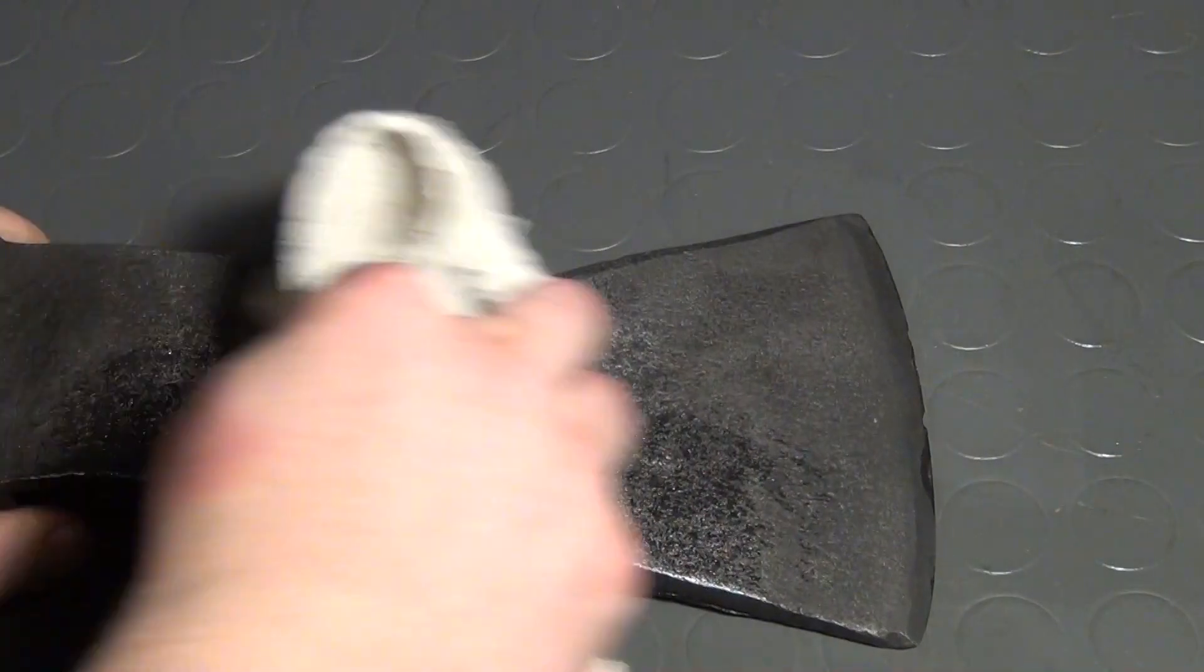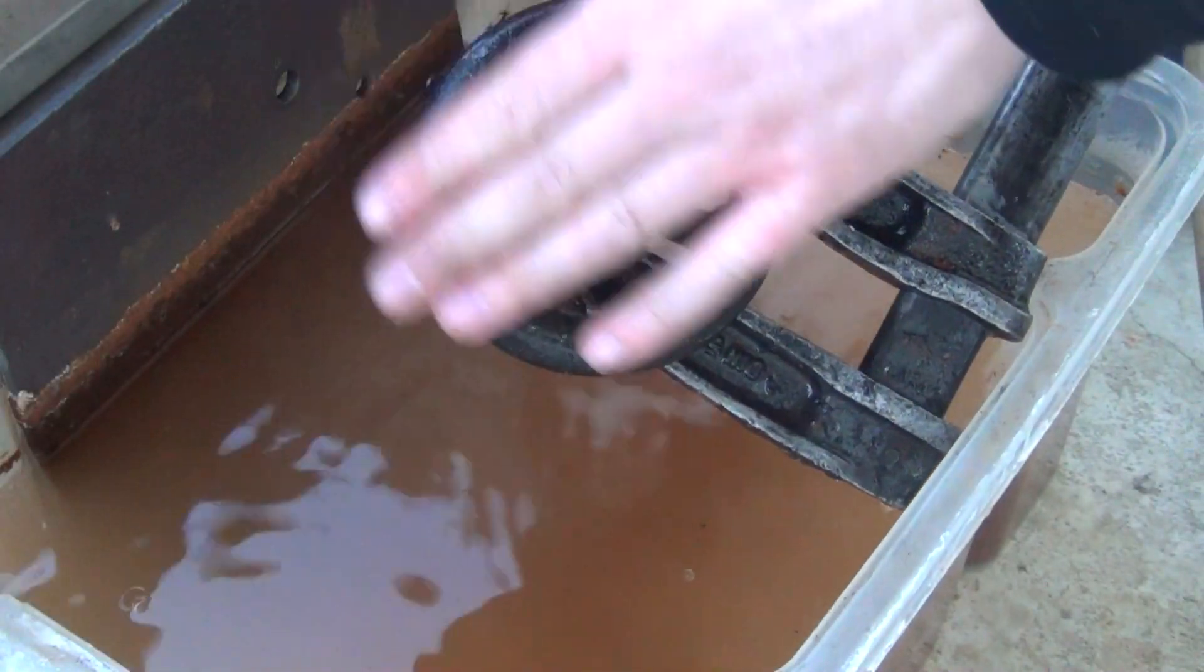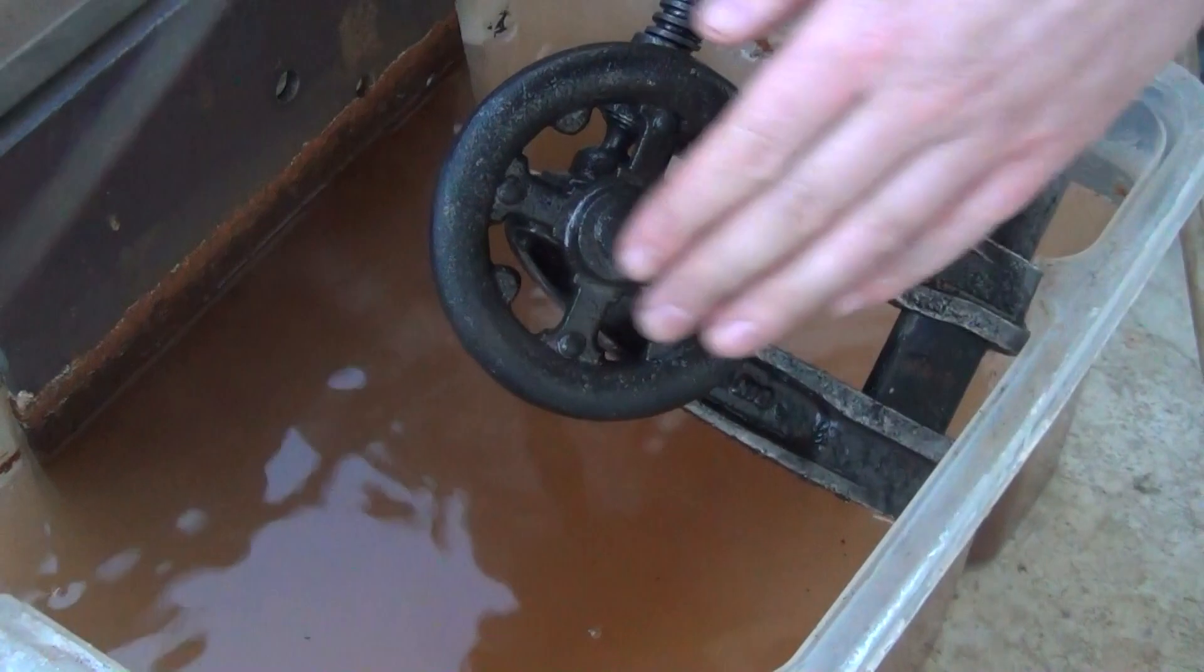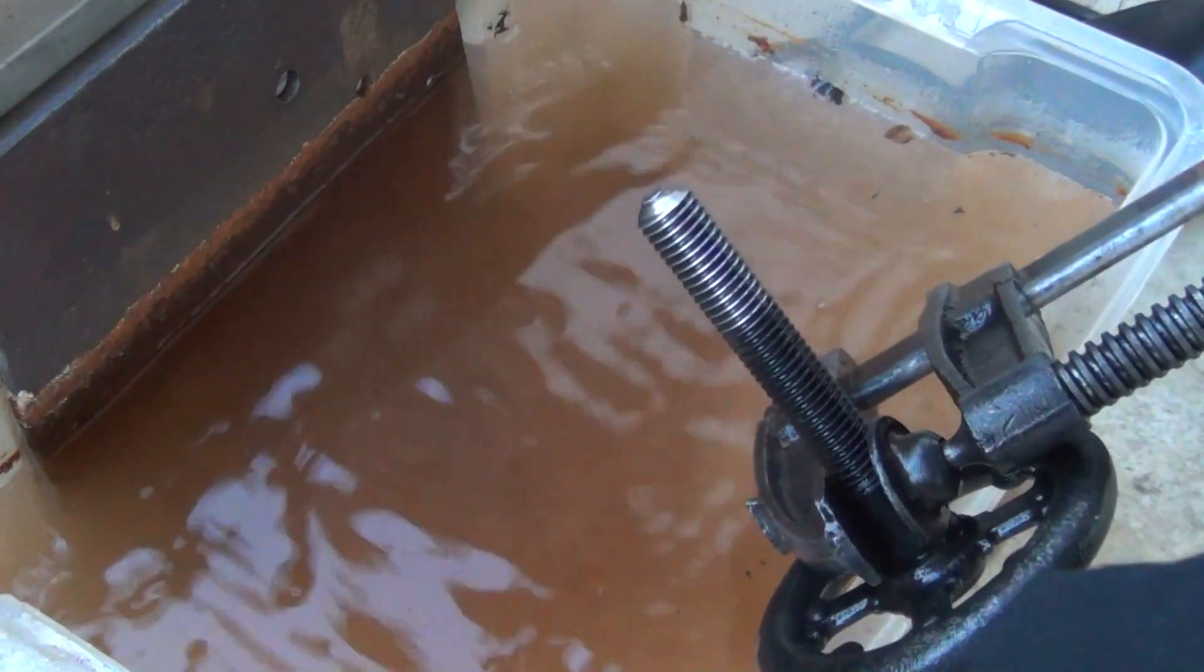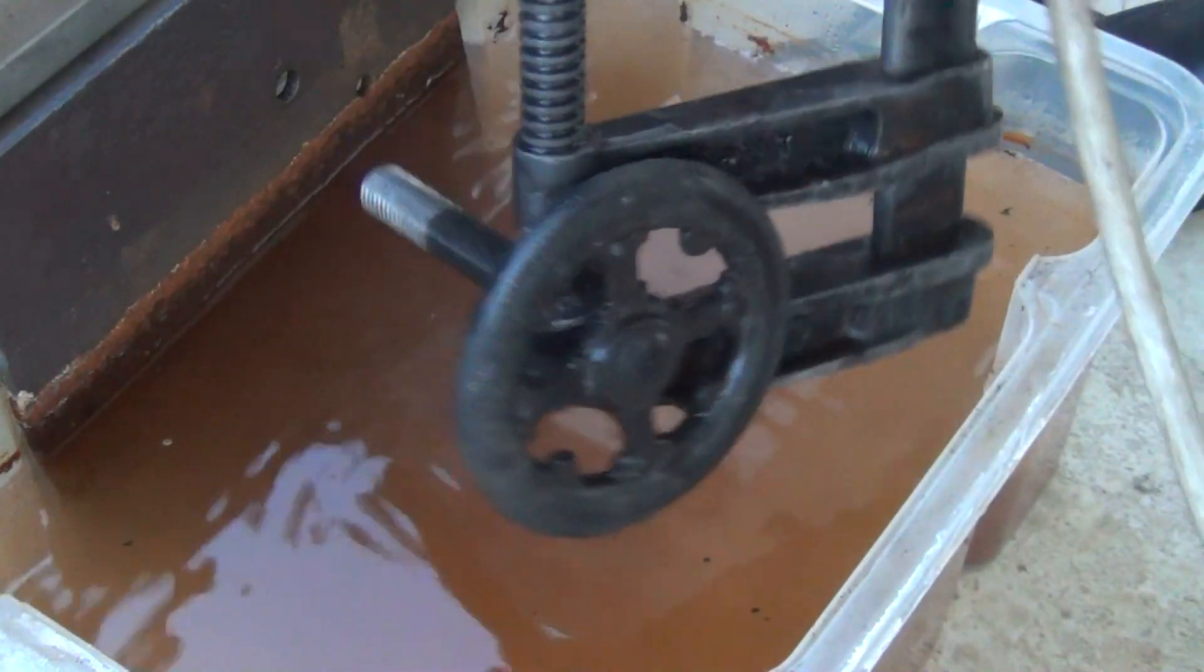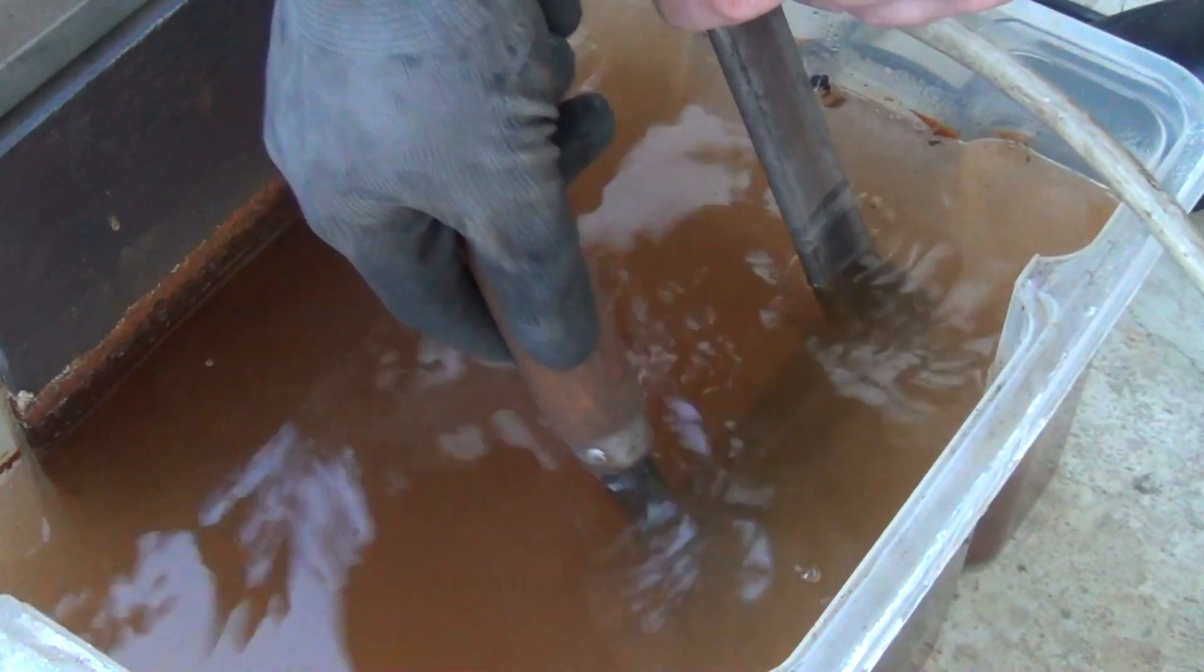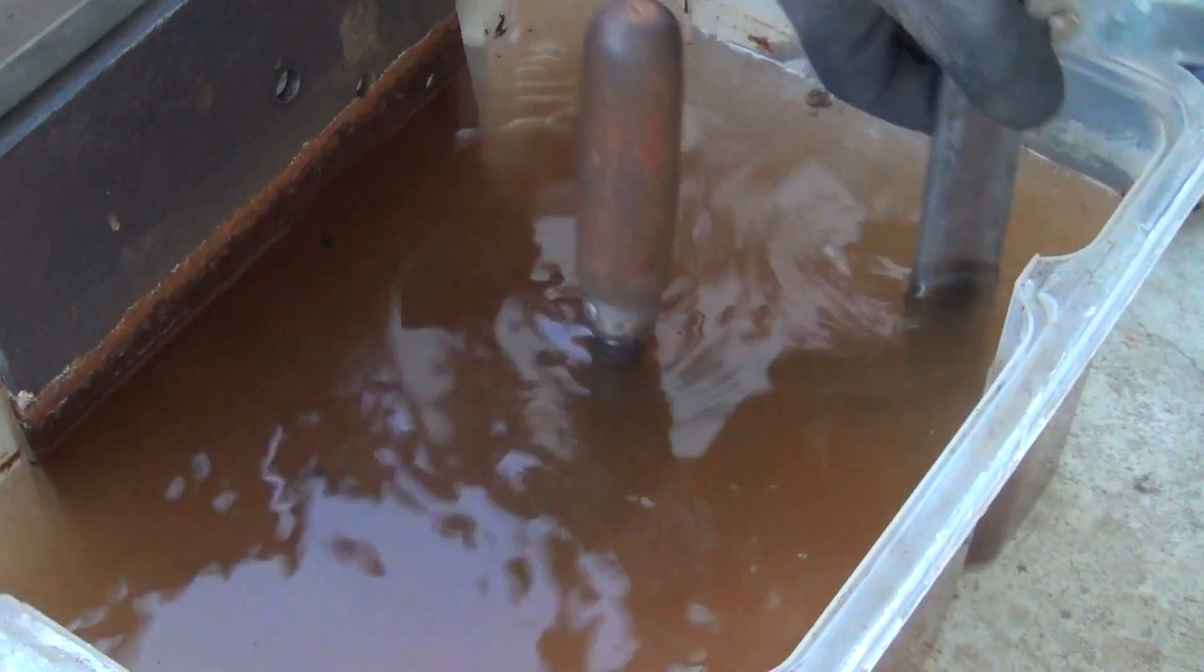After I had tried it on this forged axe head I purposely used a cast iron part, this cast iron hand wheel here, and repeated the process. This time I only waited about four hours and after that I used a wire brush to clean off the material.